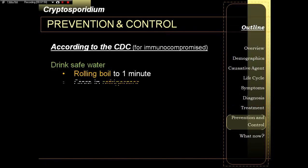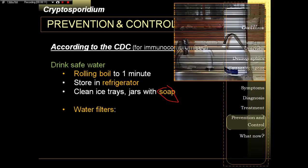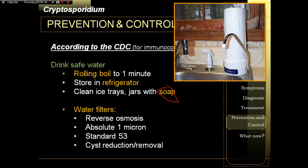To ensure clean and safe water, allow a rolling boil for one minute — not just warming, a full rolling boil. Store in the refrigerator and clean your ice trays with soap. For those using water filters, look for specific filter specifications that ensure removal of the cryptosporidium cyst, especially in high-risk countries such as the Americas.